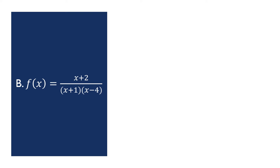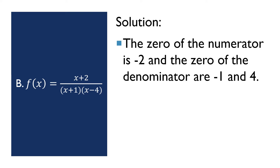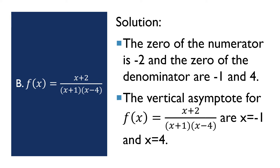Example number 2. For the function f(x) = (x + 2) / [(x + 1)(x − 4)], the zero of the numerator is negative 2 and the zeros of the denominator are negative 1 and 4. Therefore, the vertical asymptotes for the function f(x) = (x + 2) / [(x + 1)(x − 4)] are x = −1 and x = 4.